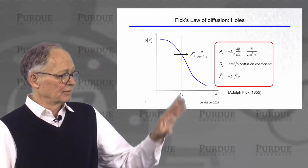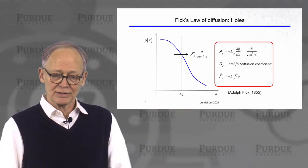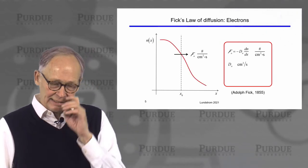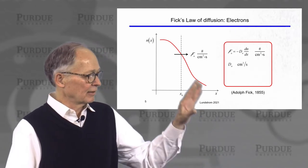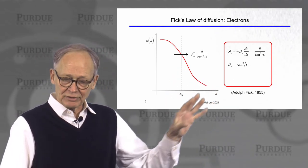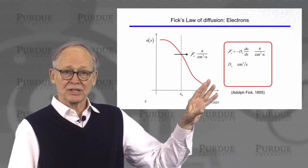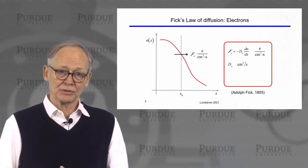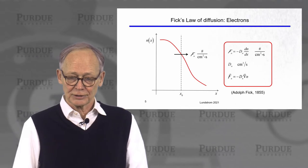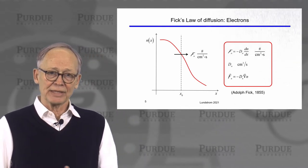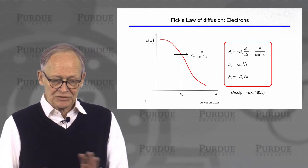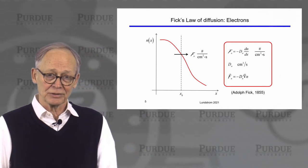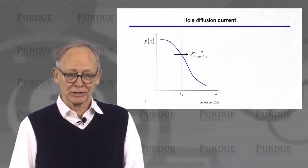In three dimensions, the flux equals minus the diffusion coefficient times the gradient of the hole concentration. Exactly the same thing applies for electrons — electrons are particles, they flow down their concentration gradient, and the flux is given by Fick's law with the electron diffusion coefficient. This has nothing to do with the charge; particles flow from high concentration to low concentration due to any type of random thermal motion.